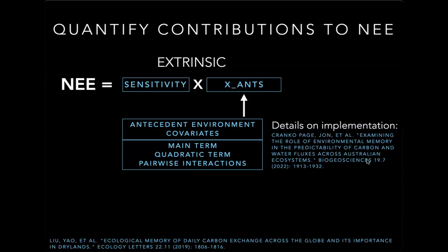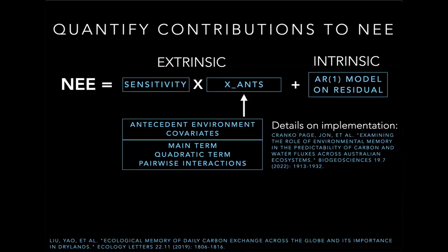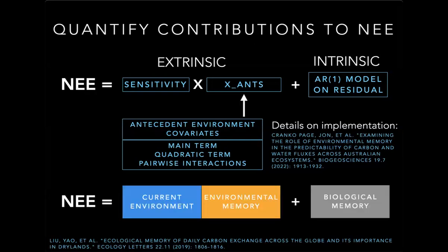The implementation of these is nicely illustrated in John's paper. For the intrinsic side of the effect, we simplified things and just used an AR1 model on the residuals to capture the slow state change. Together, you can consider NEE as the environmental effects — which includes not only the current environment but also environmental memory — and biological memory. Those can be separated out by running different model experiments, accounting or not accounting for different types of information.